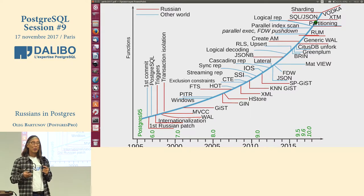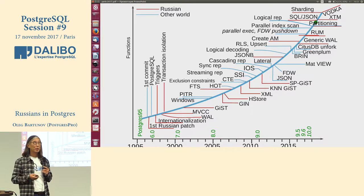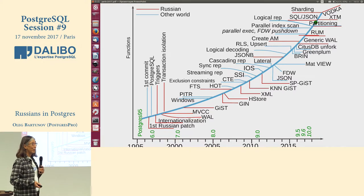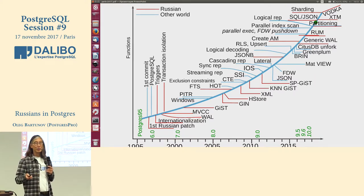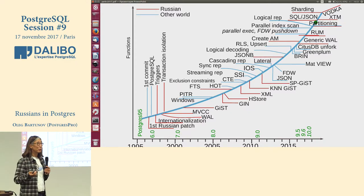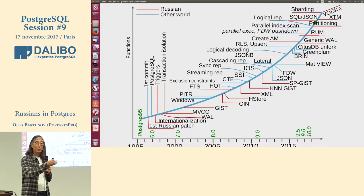We are at the point where all our Multimaster is being tested by a very big corporation in Russia. After we polish Multimaster, we will try to push it to the community. If you are interested in Multimaster, you can make a contract with our company. Our enterprise version contains not just Multimaster, but also 64-bit transaction IDs. Transaction wraparound is a really big problem for big projects. We made a patch for Postgres so our customers don't have to worry about wraparound. We would also be happy to push this back to the community, but this patch touches so many places of Postgres and the community does not have resources to review all these patches.